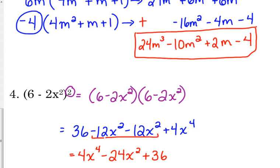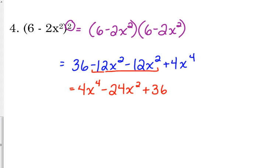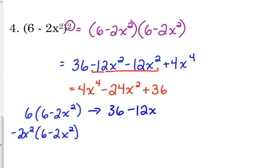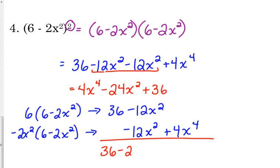Now a note can be made here that we could have done this the same way that I did the binomials times the trinomials. You could have written this as 6 times 6 minus 2x squared, negative 2x squared times 6 minus 2x squared. You could have done it the exact same way and gotten 36 minus 12x squared and minus 12x squared plus 4x to the 4th. And notice we would have gotten the exact same thing. It just wouldn't have been in standard form.